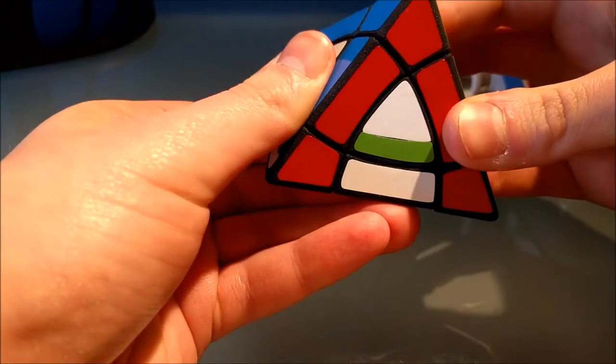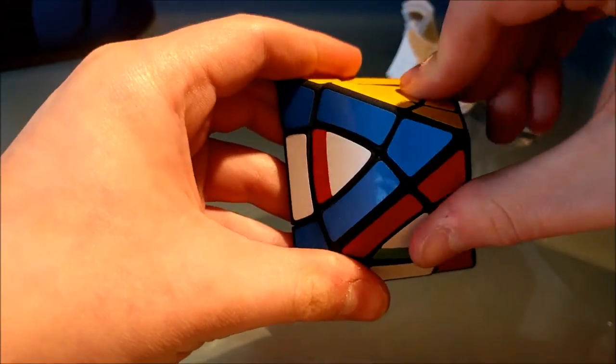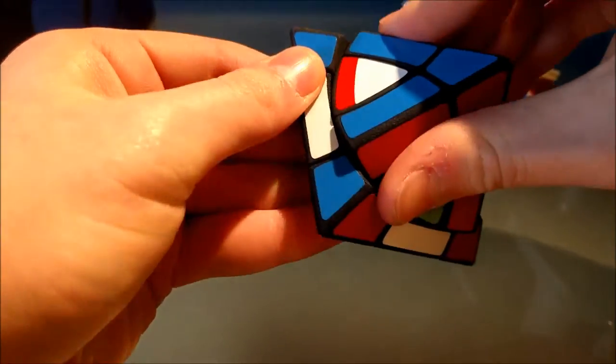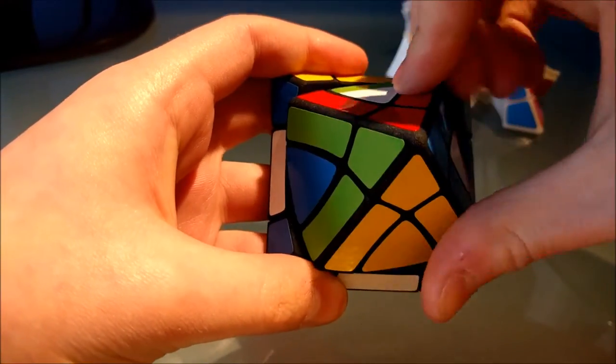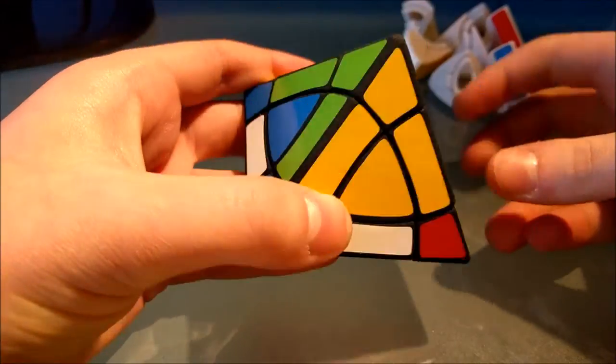So if I do a little edge piece series here, I've now moved these chunks, and now I can turn the top corner once again. And so that is actually how you scramble this puzzle up.